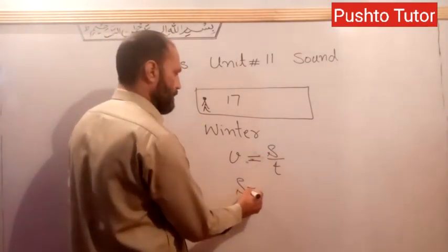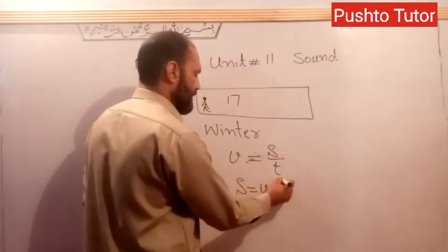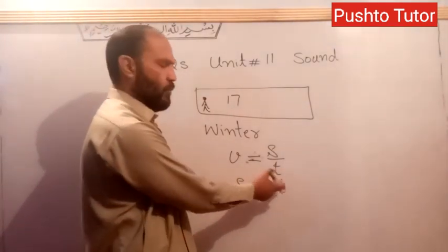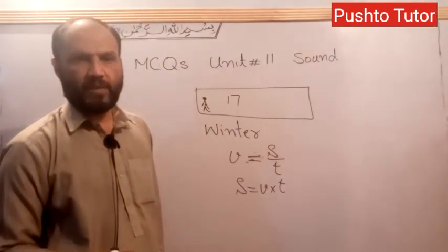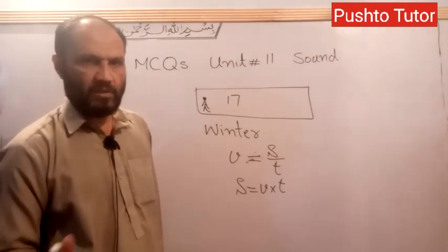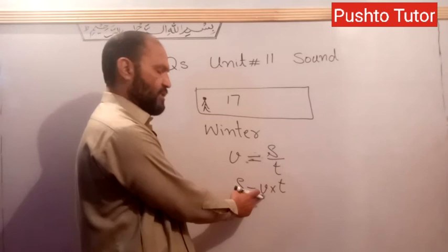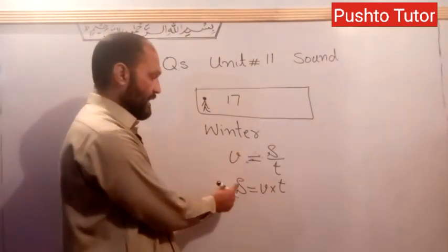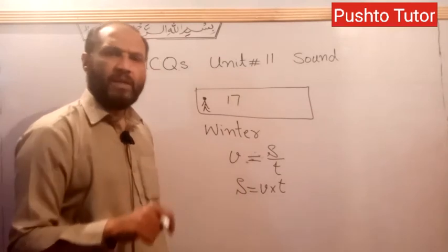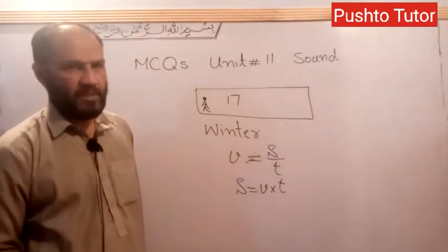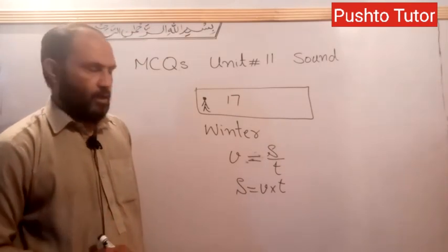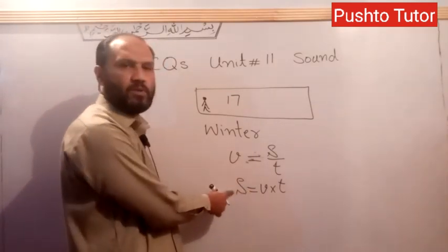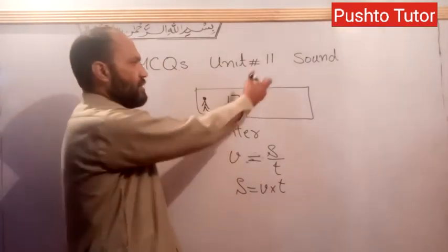Using the formula S = V × T, the distance equals speed multiplied by time. The time required is 0.1 seconds. The speed changes with temperature — when the temperature is lower, the speed of sound is also lower, so the distance is also smaller. This explains why the minimum echo distance is smallest in winter.